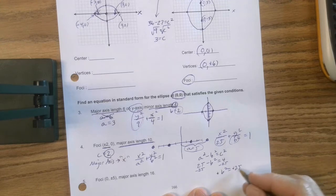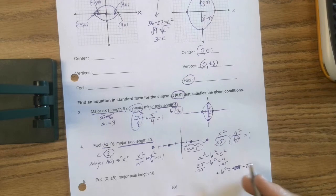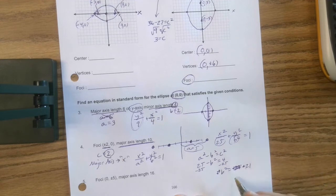So positive b squared equals positive. Oh, making some mental errors. So this should be negative 21. So negative b squared equals negative 21. So I make those both positive. And so I know that b squared equals 21.